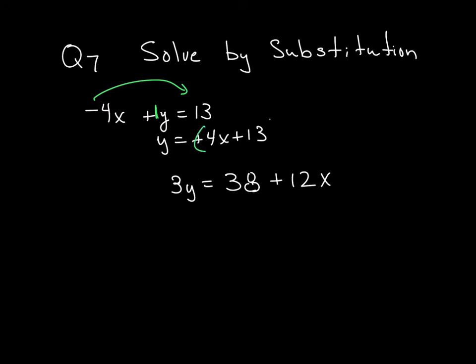Now, once I know what y is, I go ahead and replace that with y, everything that I see inside there. So that leaves me with 3 times everything that was on the inside up here, which was 4x plus 13, is equal to 38 plus 12x.